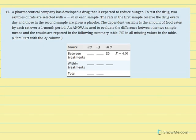Number 17: A pharmaceutical company has developed a drug expected to reduce hunger. Two samples of rats are selected with n equal to 20 in each sample. Rats in the first sample receive the drug every day; the second sample gets a placebo. The dependent variable is food eaten over one month. Analysis of variance evaluates the difference between the two sample means. We're asked to fill in all missing values in the summary table, starting with the degrees of freedom column.